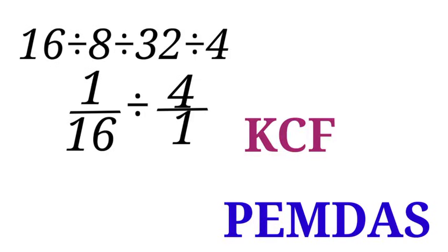So here we are going to apply KCF. K is for keep, C is for change, and F is for flip. For 1 over 16, we are going to apply K, which is keep. For the division sign, we are going to apply change. We are going to change division to multiplication. And for 4 over 1, we are going to flip. We take 1 to the numerator and bring 4 to the denominator.